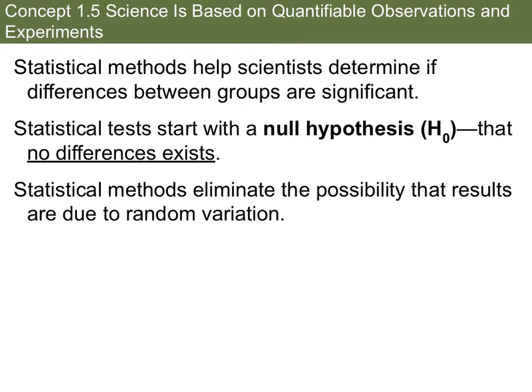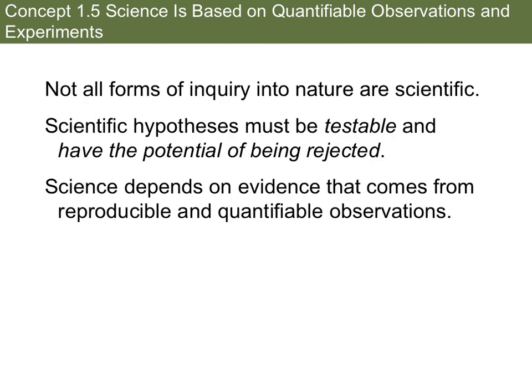Statistical methods help scientists determine if differences between groups are significant. Statistical tests start with the null hypothesis — H-O — that no difference exists between those two variables. These methods will eliminate the possibility that results are due to random variation. Just remember: hypotheses must be testable and have the potential to be rejected. Science depends on evidence, and you have to have evidence to reject or fail to reject a hypothesis. This evidence comes from repeatable and quantifiable data and observations.